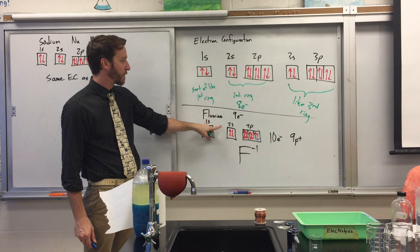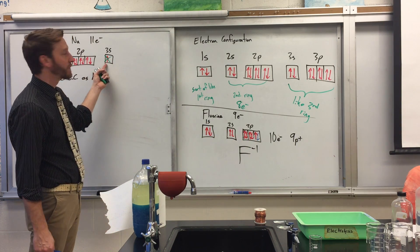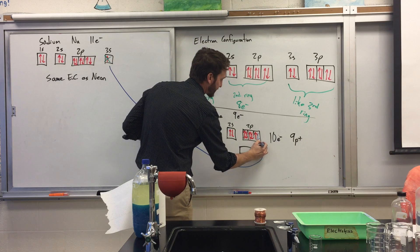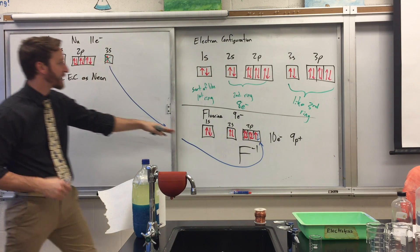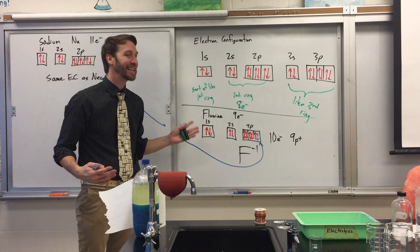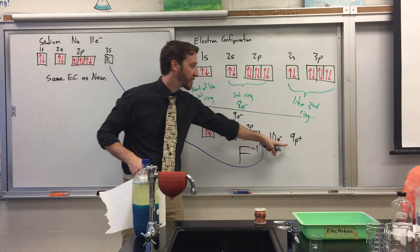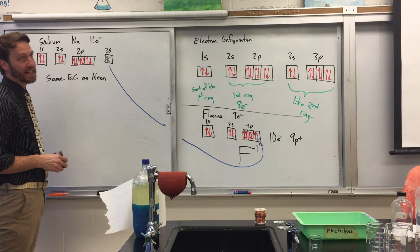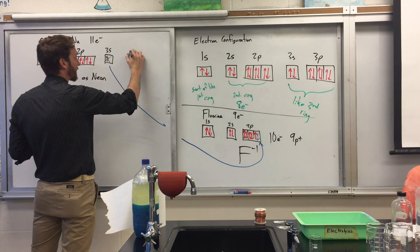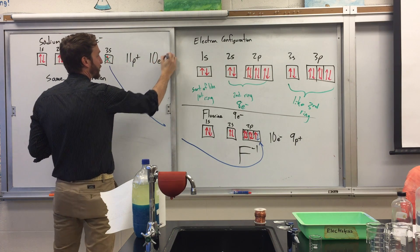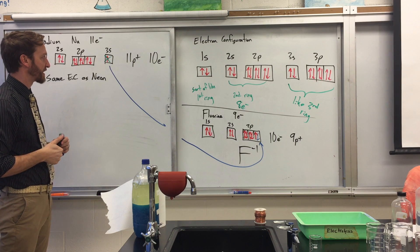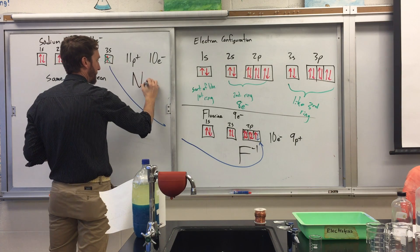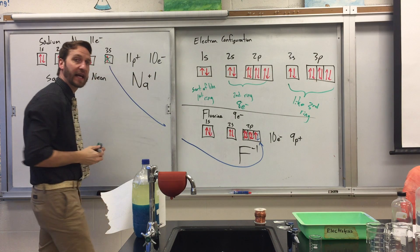If we think about fluorine, it needed to gain an electron, and sodium is trying to give up an electron. So when an ionic bond forms, sodium gives its electron to fluorine. Fluorine now has the electron configuration of neon — it's not neon because its proton count hasn't changed, but it's stable. Sodium is also like neon: it still has 11 protons, but now has 10 electrons, and that's a stable number. With one more positive charge than negative, we call it Na⁺¹.